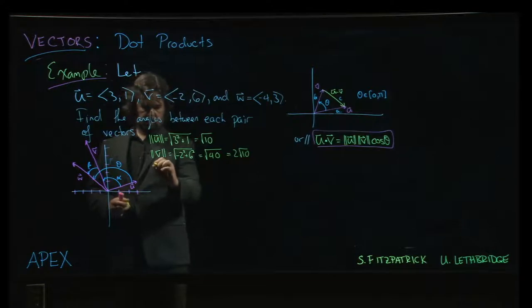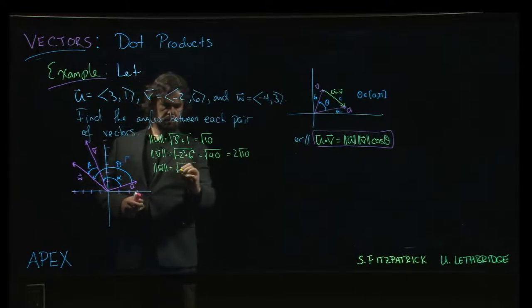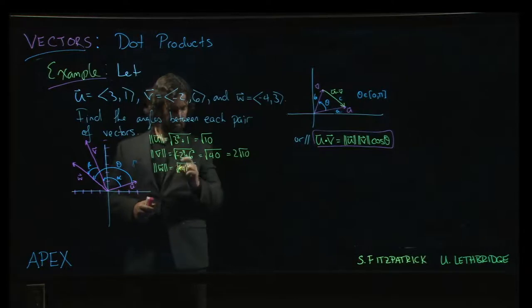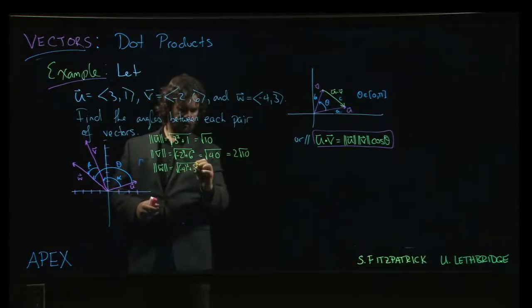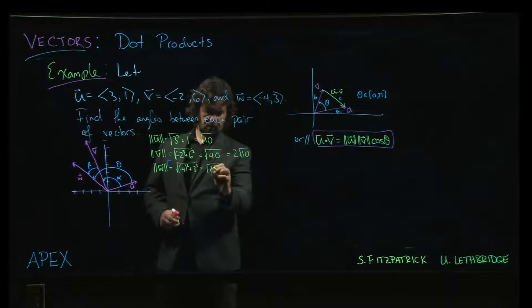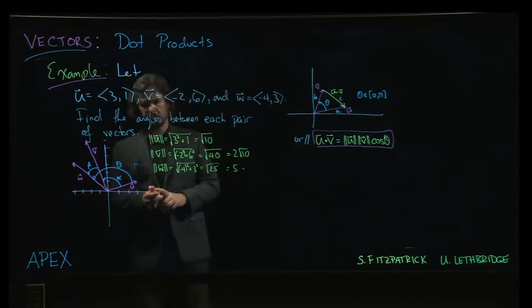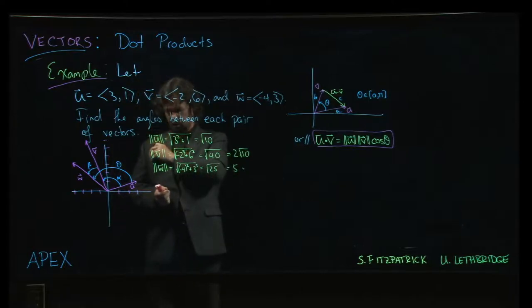And finally, we have the vector w. And we're going to get minus 4 squared. I should be careful there, right? Parentheses around the negative so we don't accidentally forget to square the minus sign. So minus 4 squared, we get 16. 3 squared, we get 9. Altogether, 25. That works out to be a nice number. We get 5 in that case.